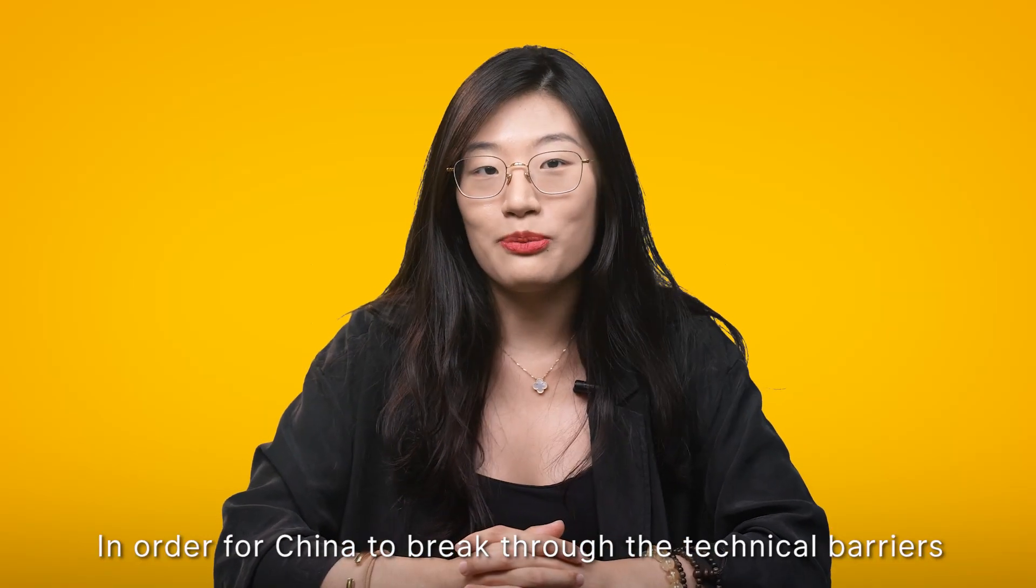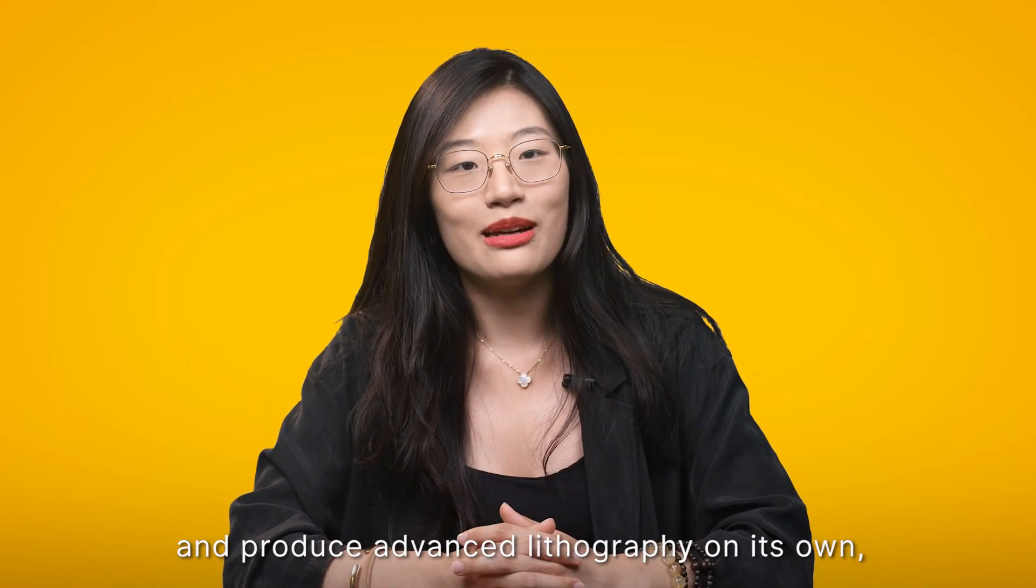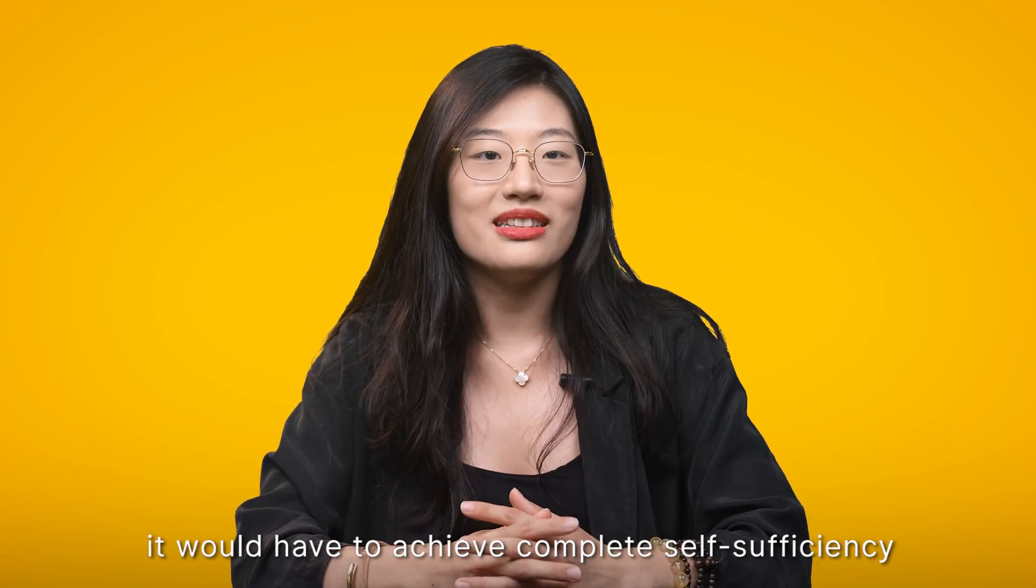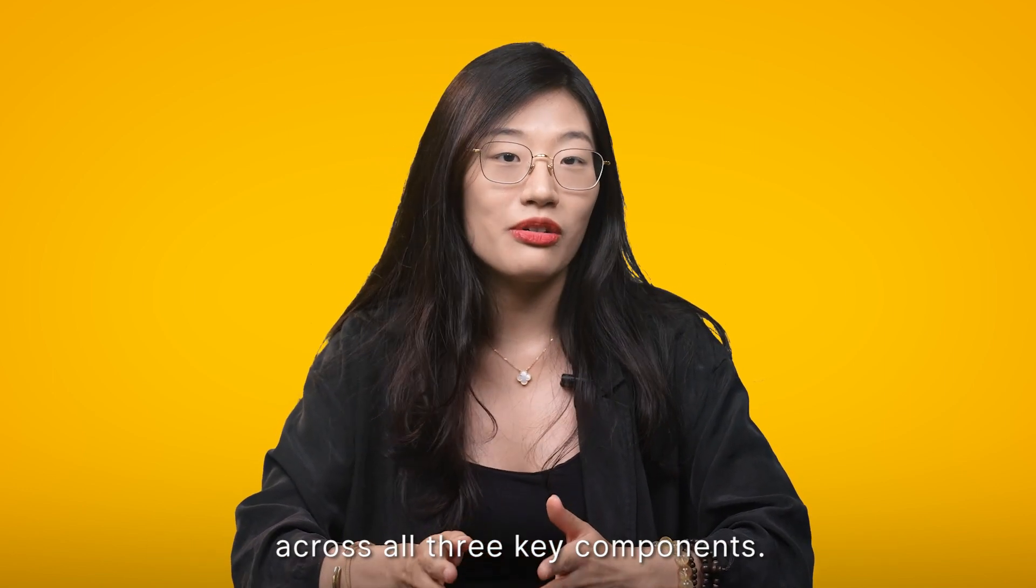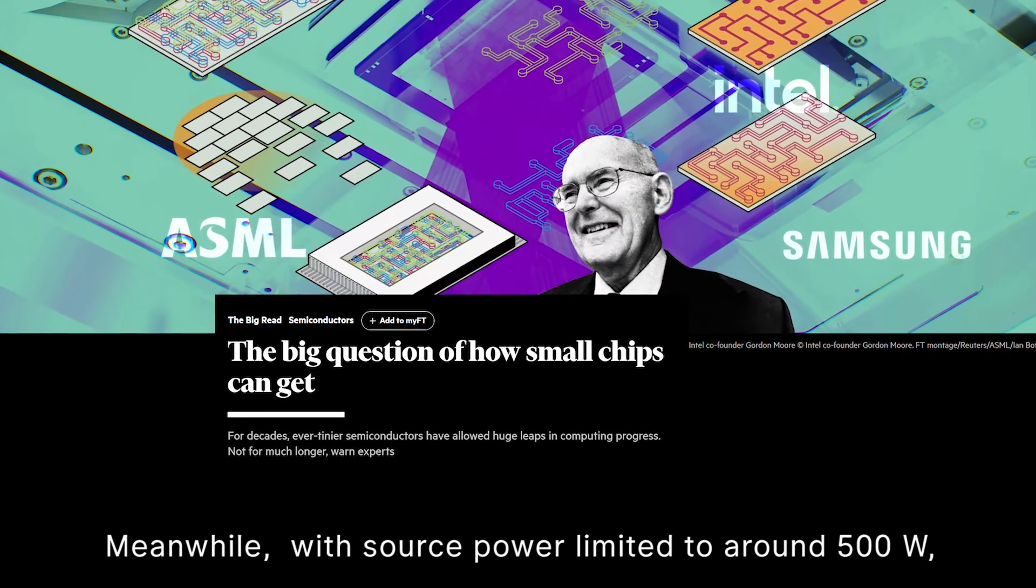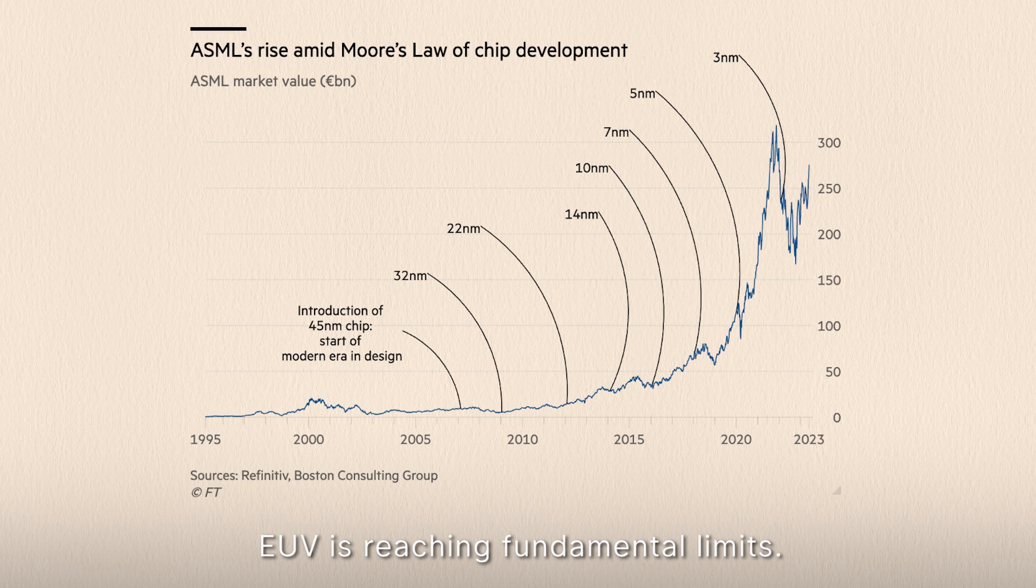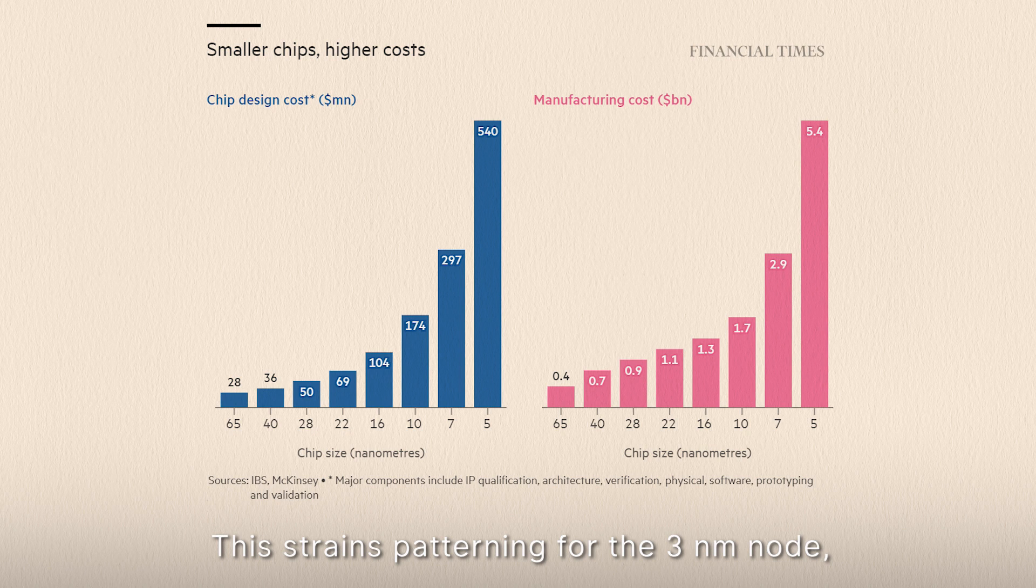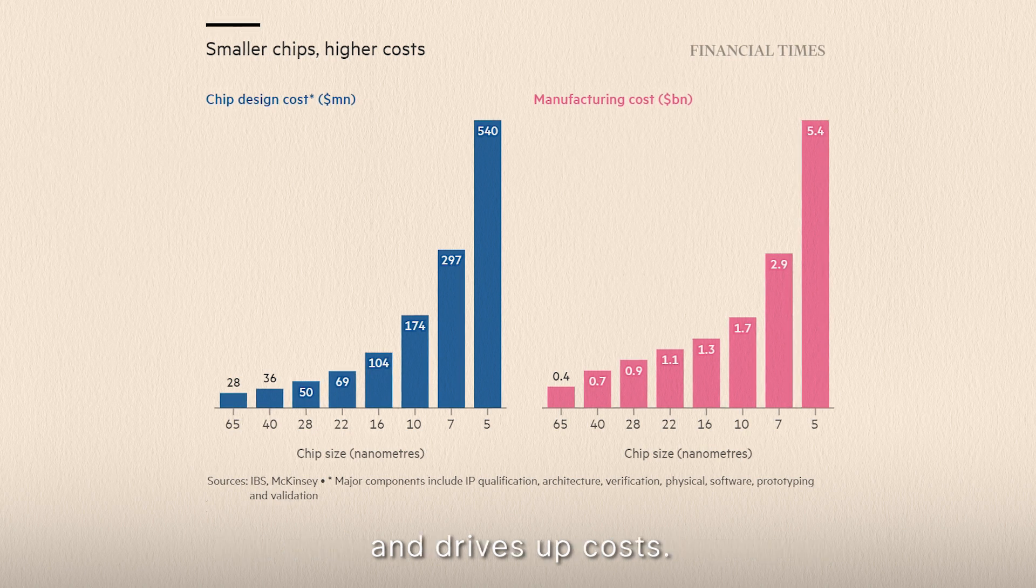In order for China to break through the technical barriers and produce advanced lithography on its own, it would have to achieve complete self-sufficiency across all three components. Meanwhile, with source power limited to around 500 watts, EUV is reaching fundamental limits. This strains patterning for the 3 nanometer node and drives up cost.